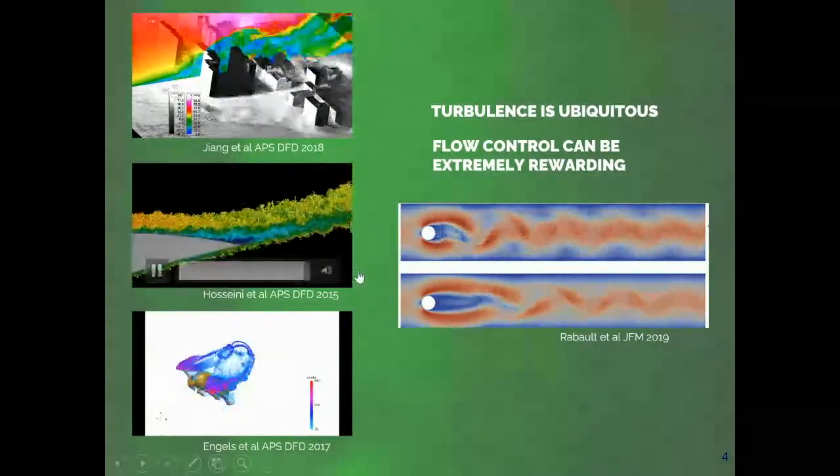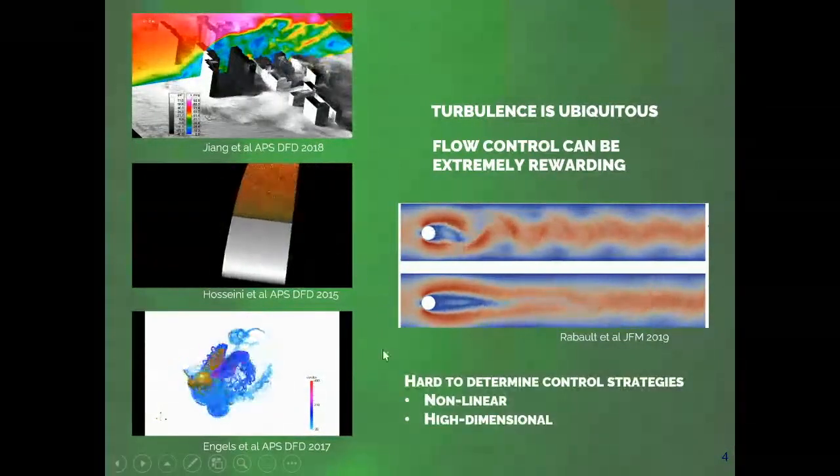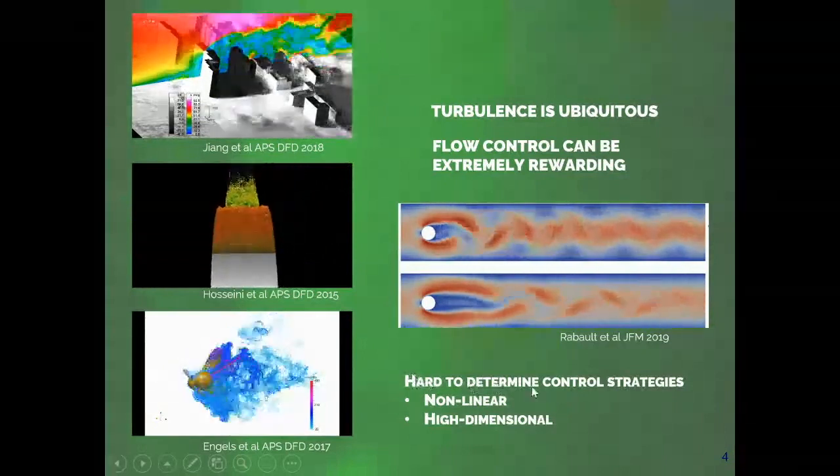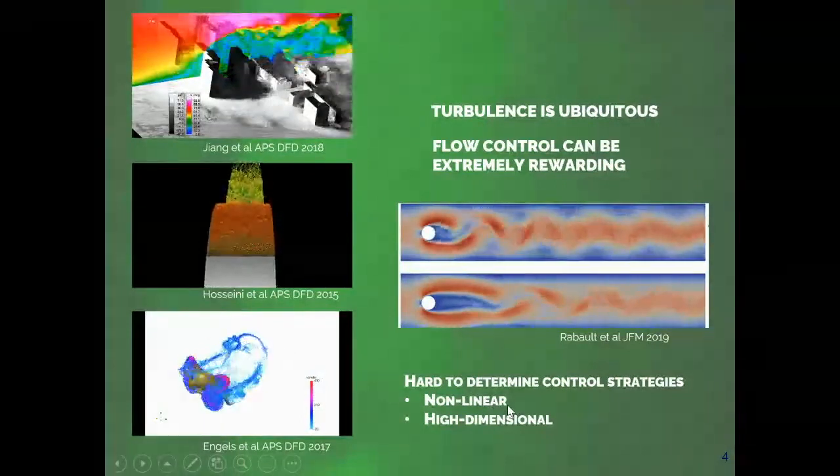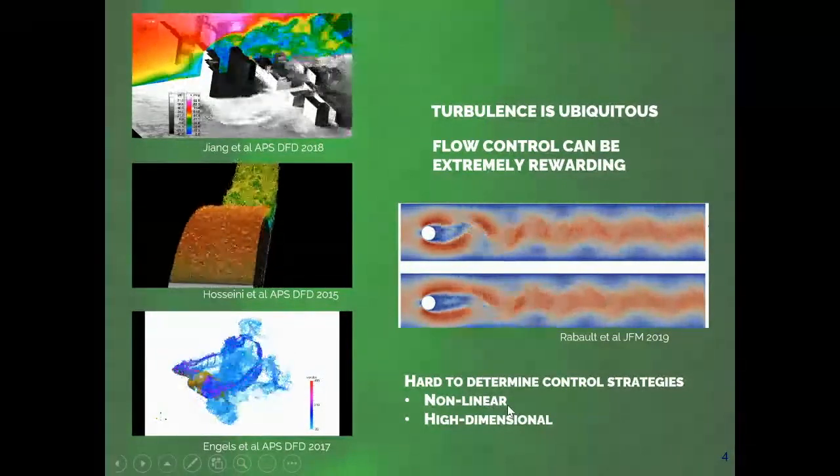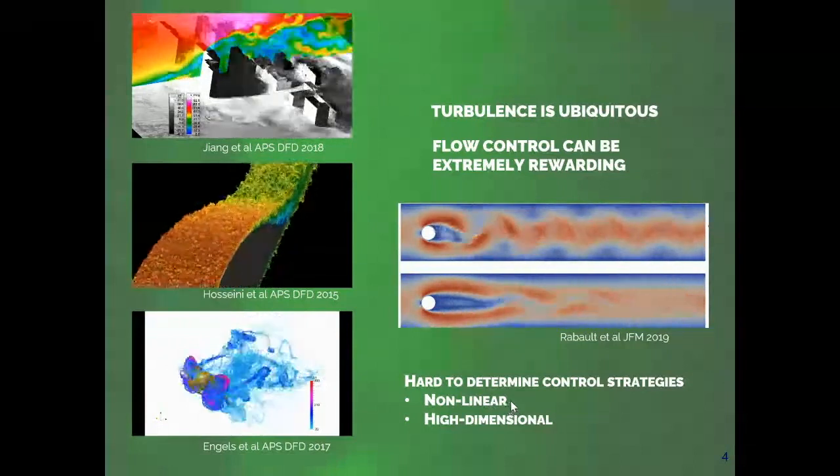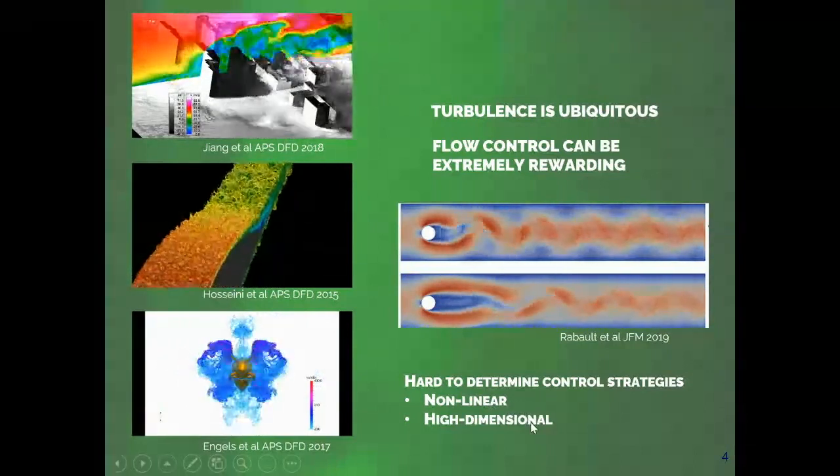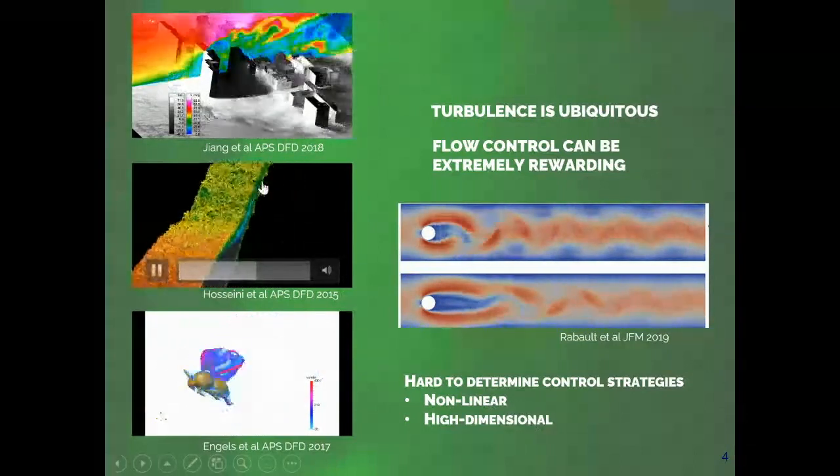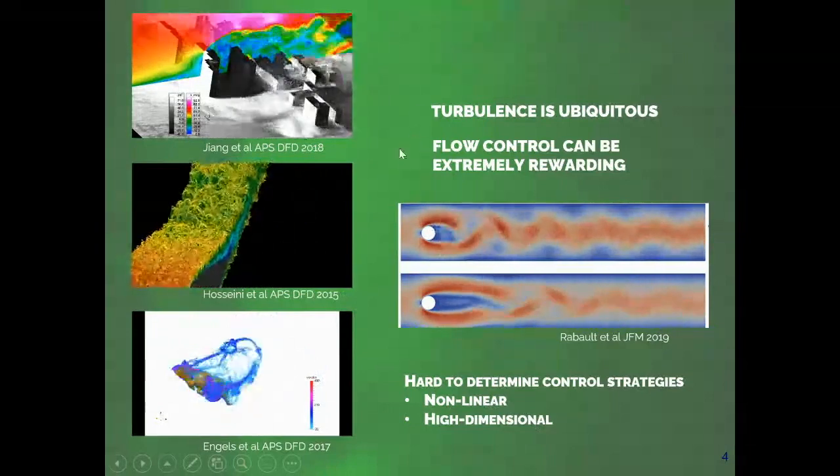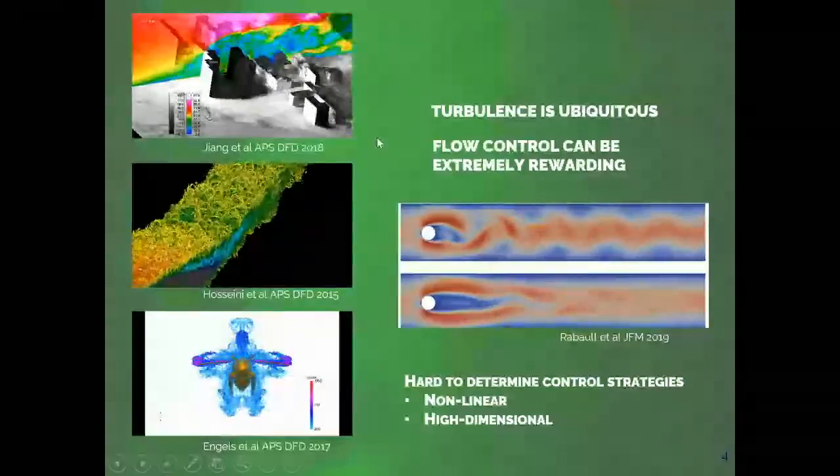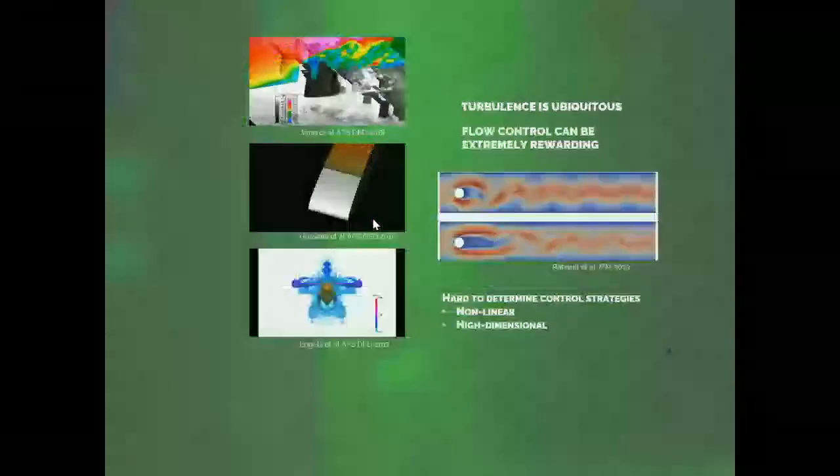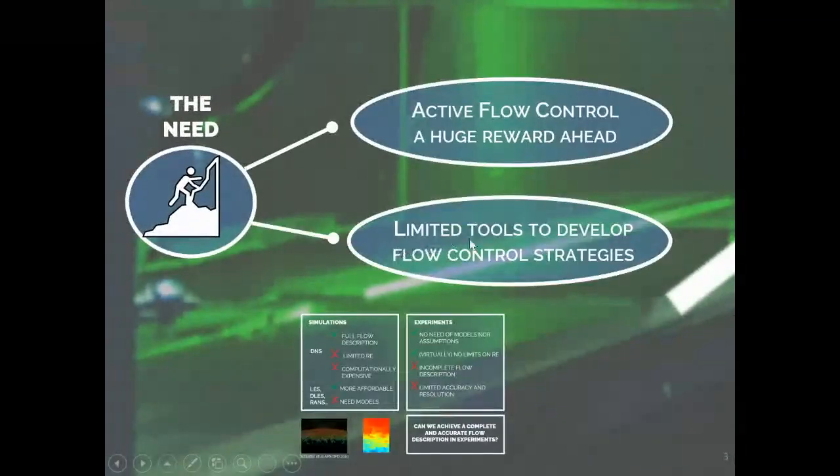Now, this is quite a complicated problem because turbulent flows are really hard when it comes to determining control strategies. On one side, because their behavior is highly nonlinear and the bigger the Reynolds number gets, the worse things go. And it is high dimensional. As you see, there's a large chaos of structures evolving on a large dimensional manifold. So it's very difficult to identify control strategies.